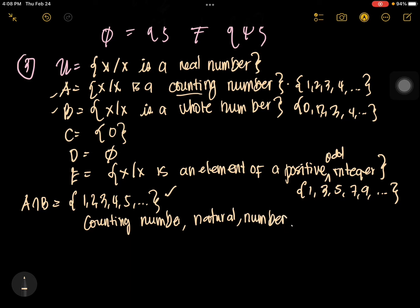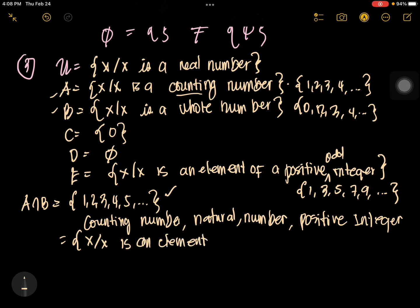It is also called natural number, and also positive integer. So you can select any of these descriptions — your answer is still correct. So in rule method: {x | x is an element of a natural number}. You just choose natural number for this item. This is A intersection B.